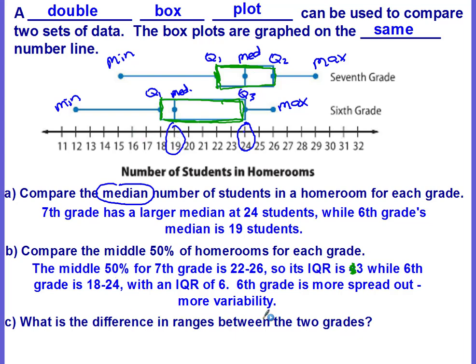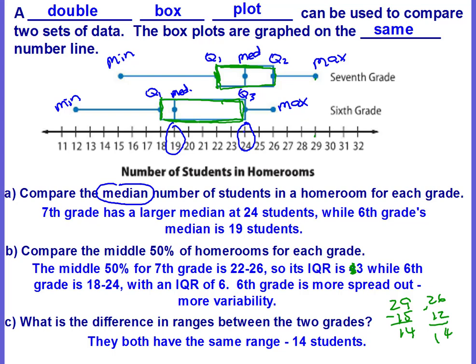What is the difference in ranges between the two grades? Remember, range means high minus low. For 7th grade: maximum 29 minus minimum 15 equals 14. For 6th grade: maximum 26 minus minimum 12 equals 14. So there is no difference — both grades have the same range of 14 students.